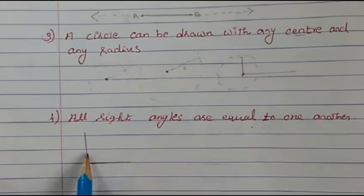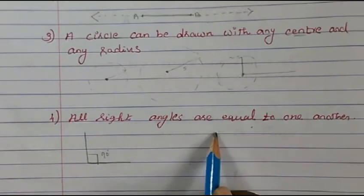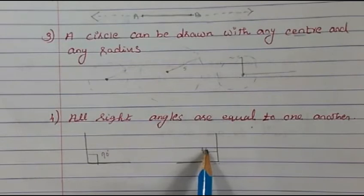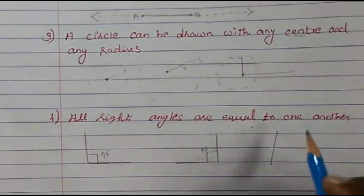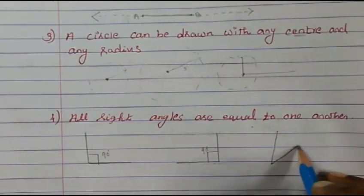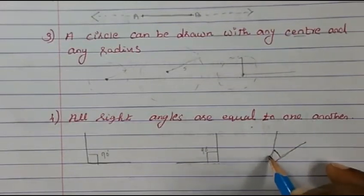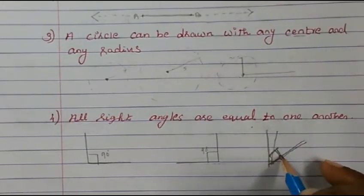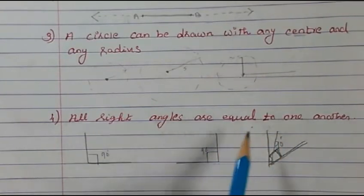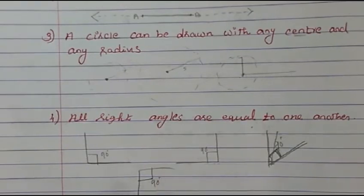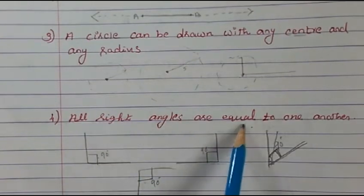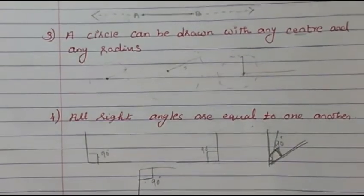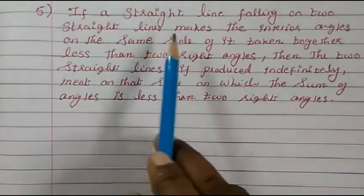The fourth postulate: all right angles are equal to one another. A right angle is always 90 degrees, regardless of its orientation — whether pointing this direction or that direction. So all right angles are equal to one another.